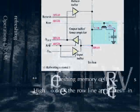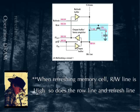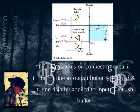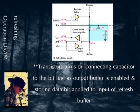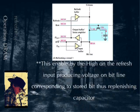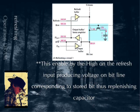When refreshing a memory cell, the RW line is high, as is the row line and the refresh line. The transistor turns on, connecting the capacitor to the bit line. The output buffer is enabled and the stored data bit is applied to the input of the refresh buffer, which is enabled by the high on the refresh input, producing a voltage on the bit line corresponding to the stored bit and restoring the capacitor charge.